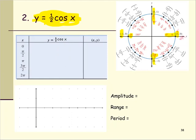So we make a list of five key points. The cosine values are one, zero, negative one, zero, one — at angles zero, pi over two, pi, three pi over two, and two pi.